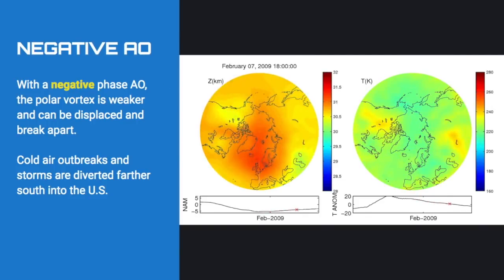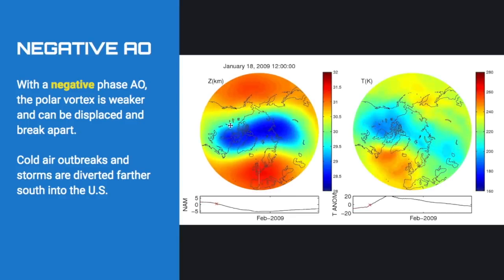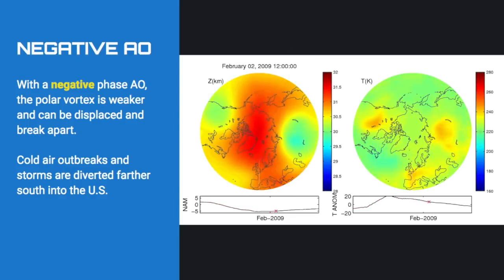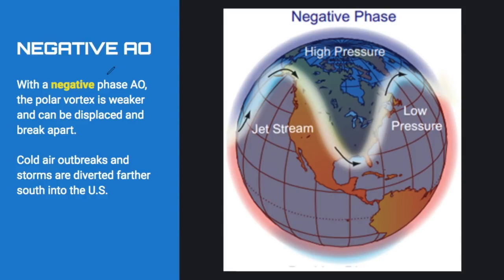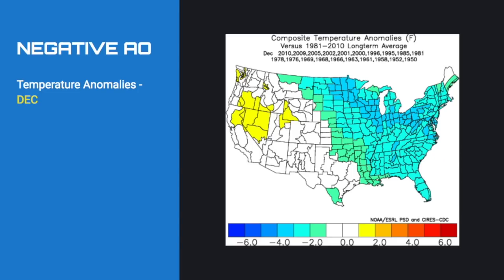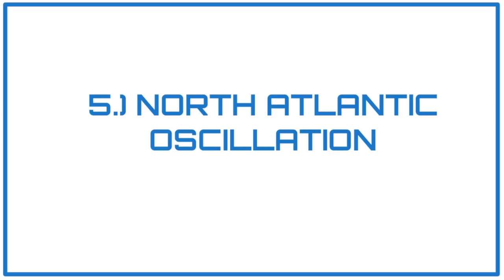Here's an animation showing the polar vortex just breaking apart, with cold air outbreaks diving into the central and eastern United States forming a nice trough. Looking at historical negative AO years across December, January, February, and March, you see very cold conditions across much of the United States, especially the east half.